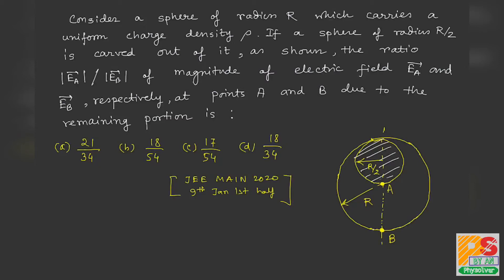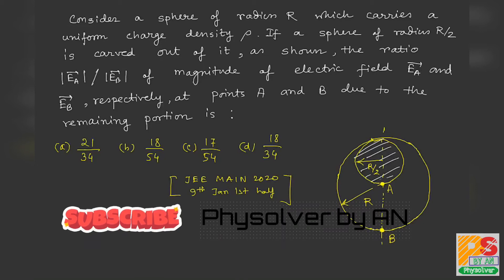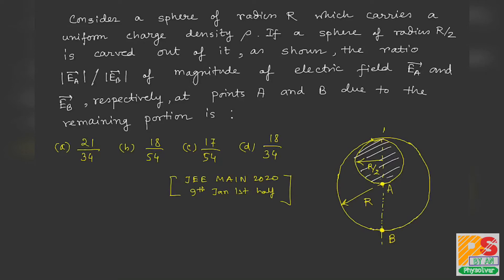Consider a sphere of radius R which carries a uniform charge density rho. If a sphere of radius R/2 is carved out of it, find the ratio EA/EB, where EA and EB are the magnitudes of electric field at points A and B as shown in the figure. This question is taken from JEE Mains 2020, 9 January, first shift.